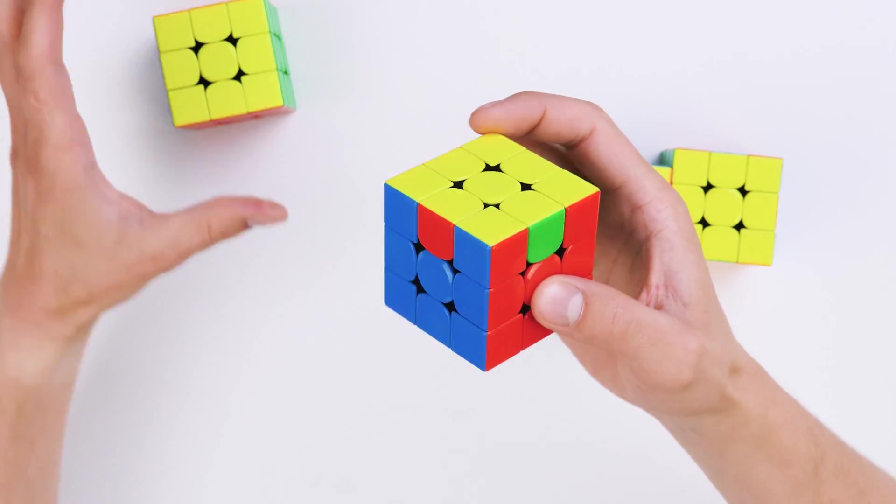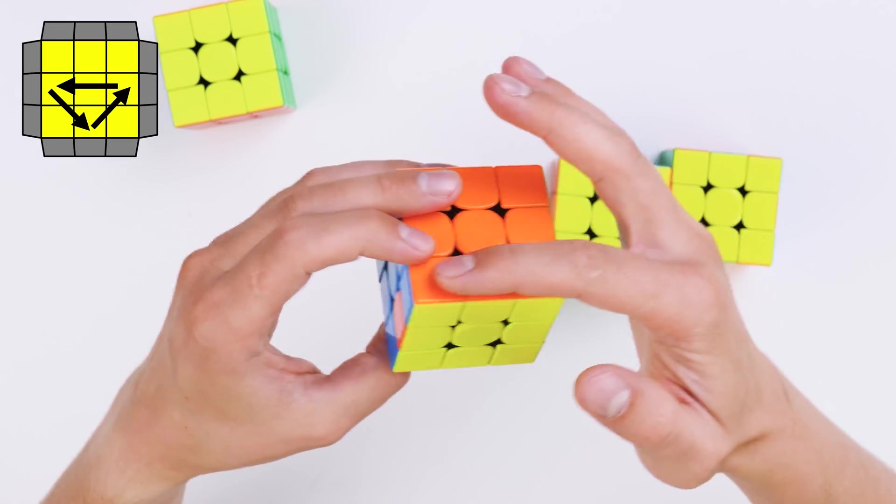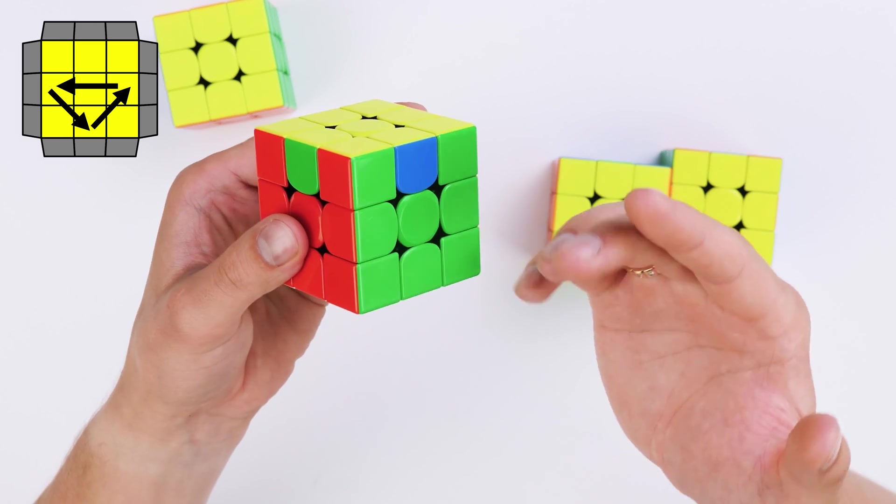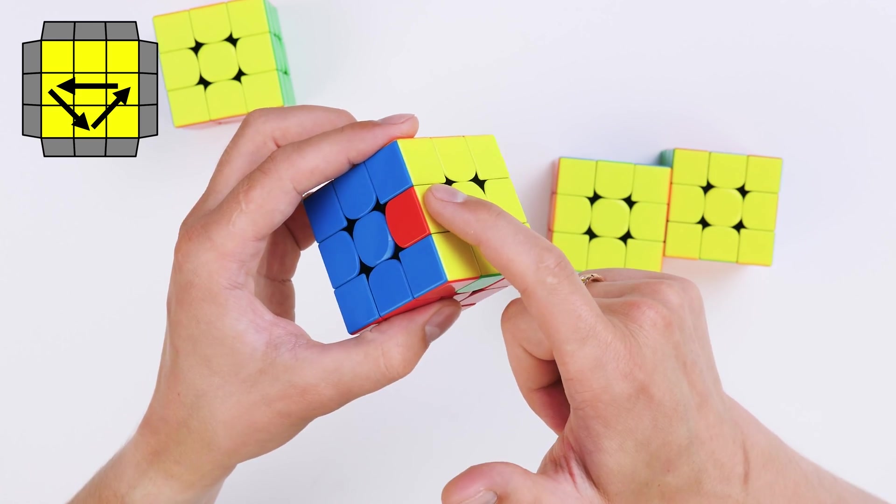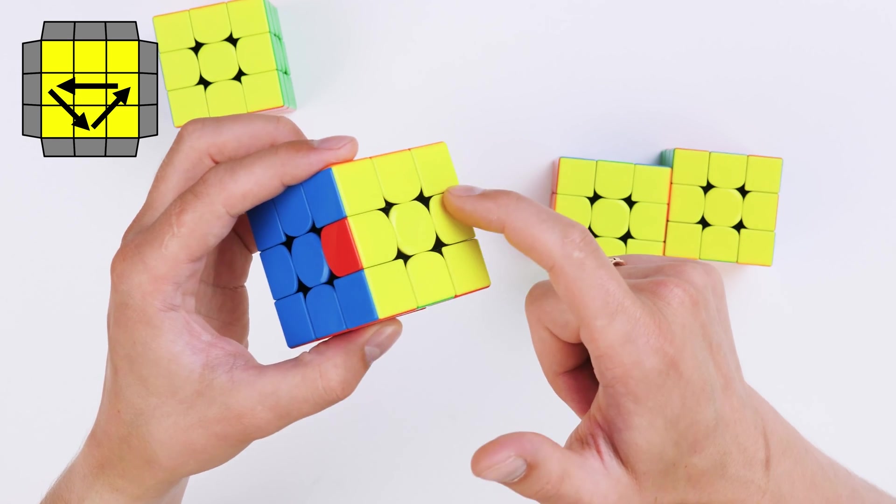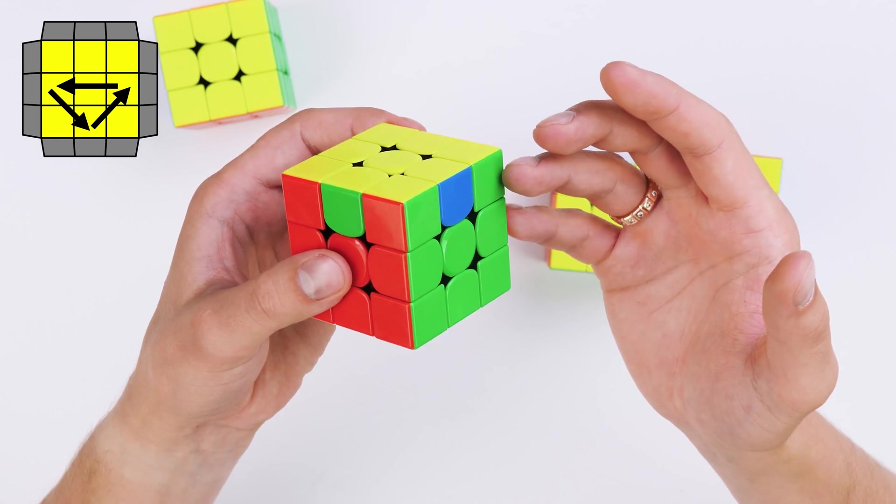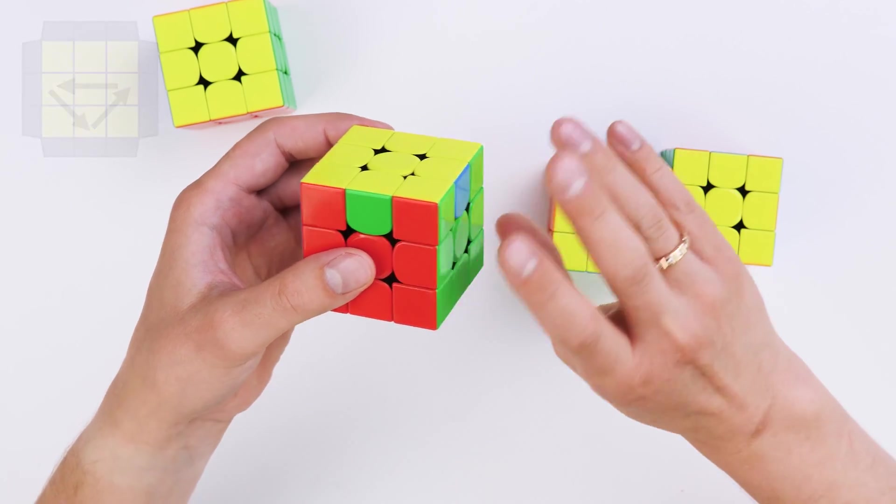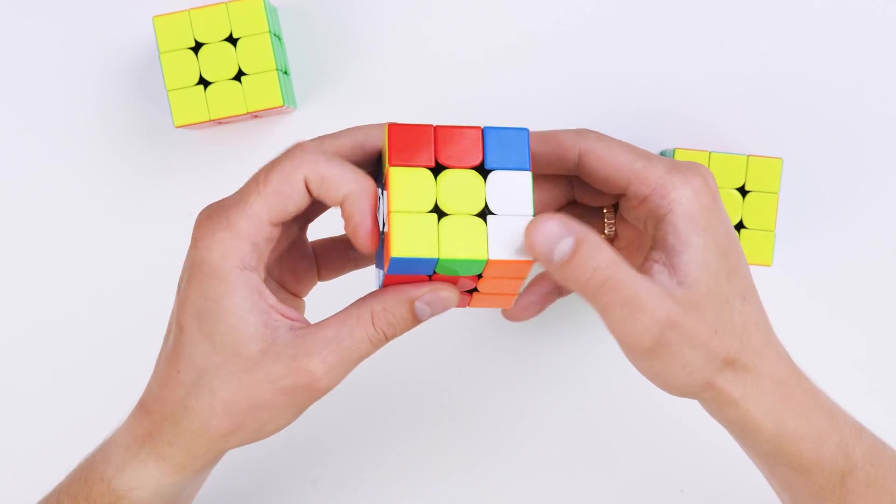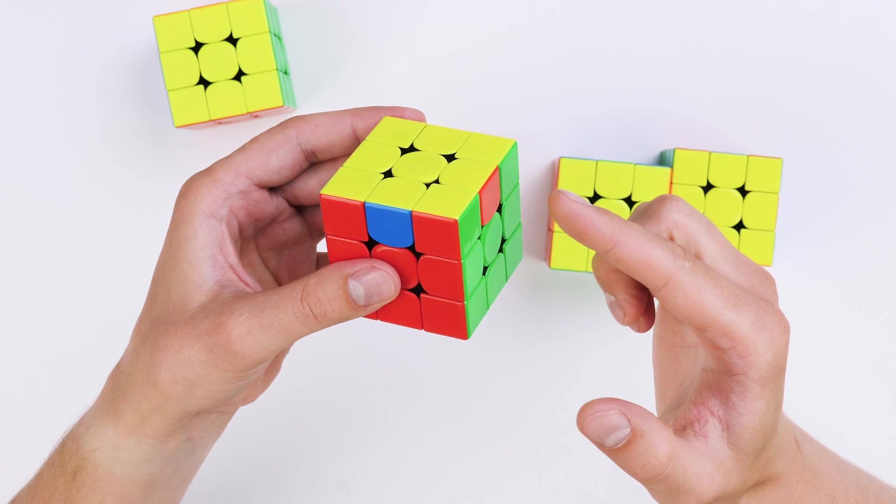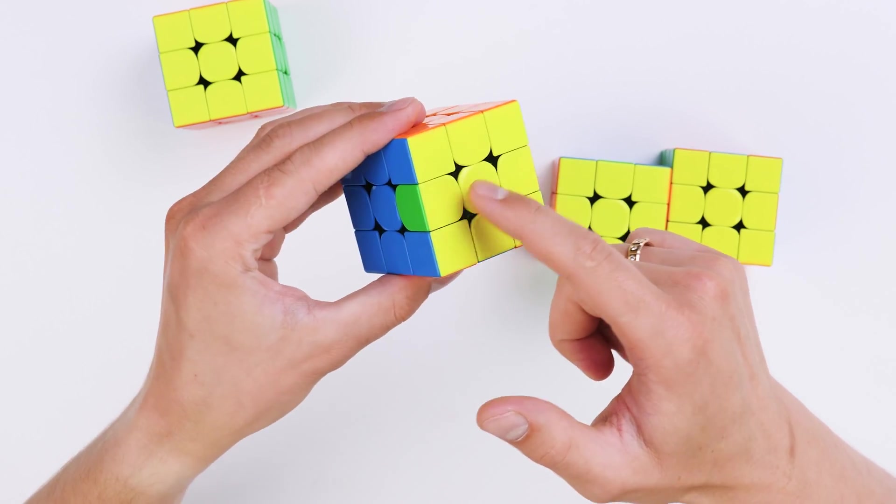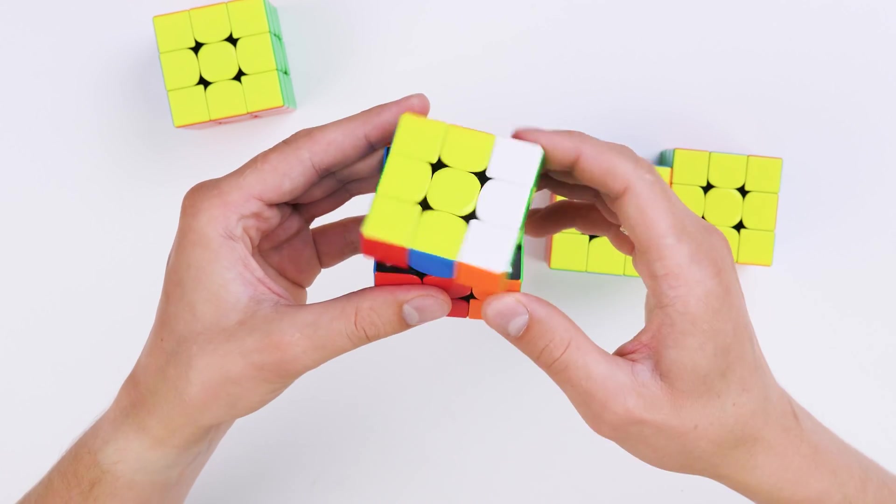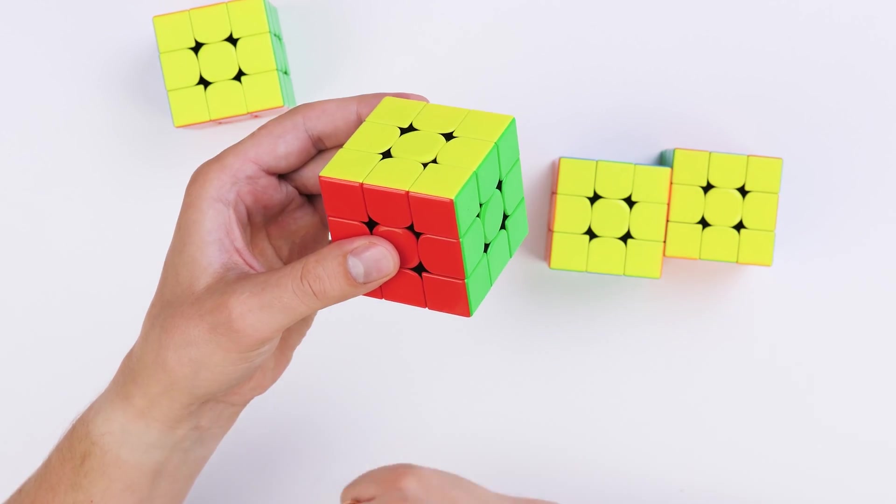There is also such a case, very similar. At the back we have everything solved, but here are three parts that need to be swapped. But look, in this case they have to change counterclockwise. In this situation we have to do not one, but two U-perms. We have now come to the previous situation and it is solved by another U-perm. We do it. A cube is solved.